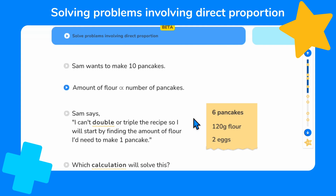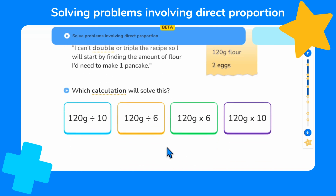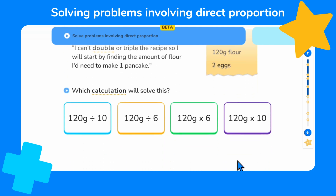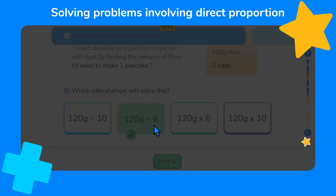Sam wants to make 10 pancakes. We're told that the amount of flour is directly proportional to the number of pancakes. Remember, this symbol means directly proportional — the two values increase or decrease in the same ratio. Sam says: I can't double or triple the recipe, so I will start by finding the amount of flour I'd need to make one pancake. We know that six pancakes need 120 grams of flour, so to work out how much flour one pancake will need, we need to divide 120 by six.